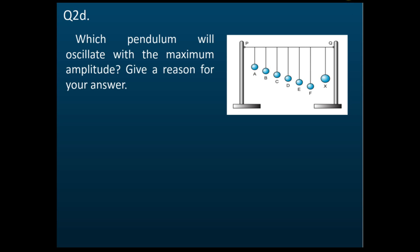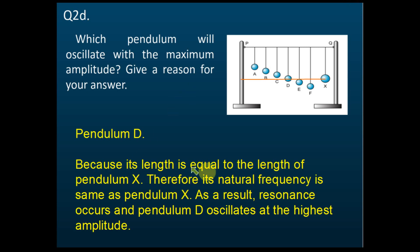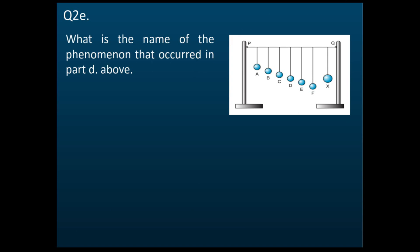Which pendulum will oscillate with the maximum amplitude? Drawing a line from the center of the pendulum bob, it is pendulum D. Pendulum D will oscillate with maximum amplitude because its length is equal to the length of pendulum X. Therefore, its natural frequency is the same as pendulum X. As a result, resonance occurs and pendulum D oscillates at the highest amplitude — because they have the same length and therefore the same natural frequency.